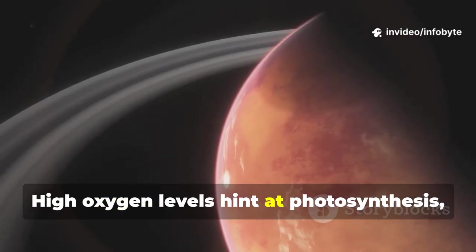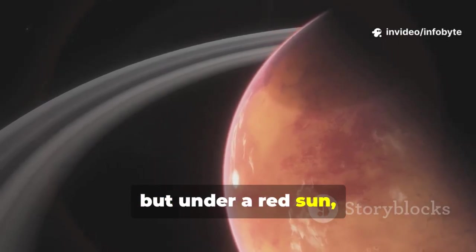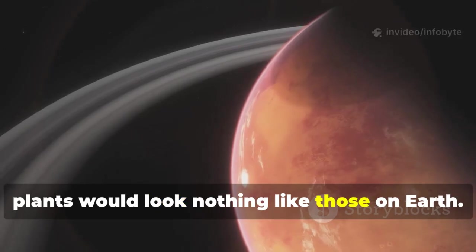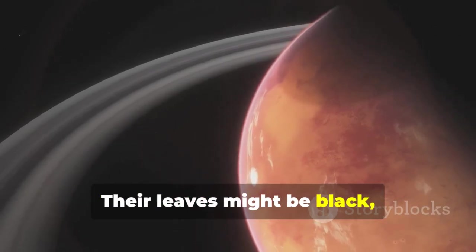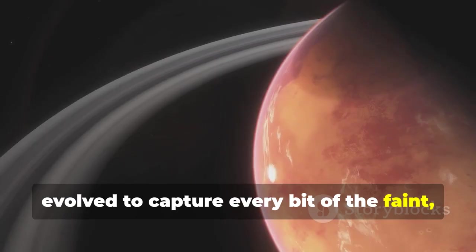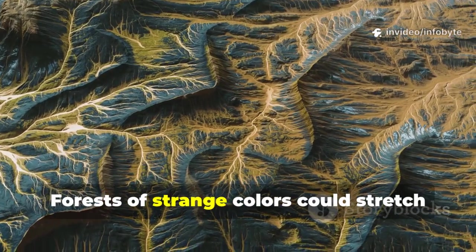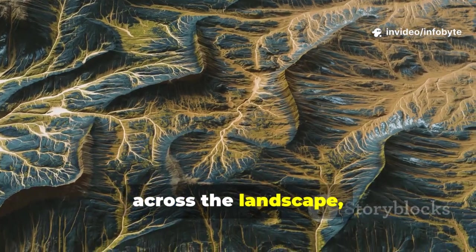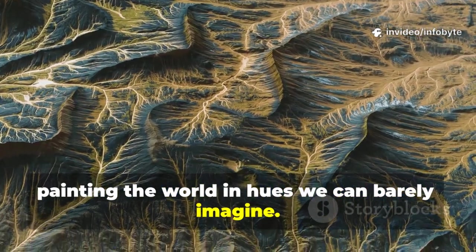High oxygen levels hint at photosynthesis but under a red sun, plants would look nothing like those on earth. Their leaves might be black, purple or deep red, evolved to capture every bit of the faint crimson light. Forests of strange colors could stretch across the landscape, painting the world in hues we can barely imagine.